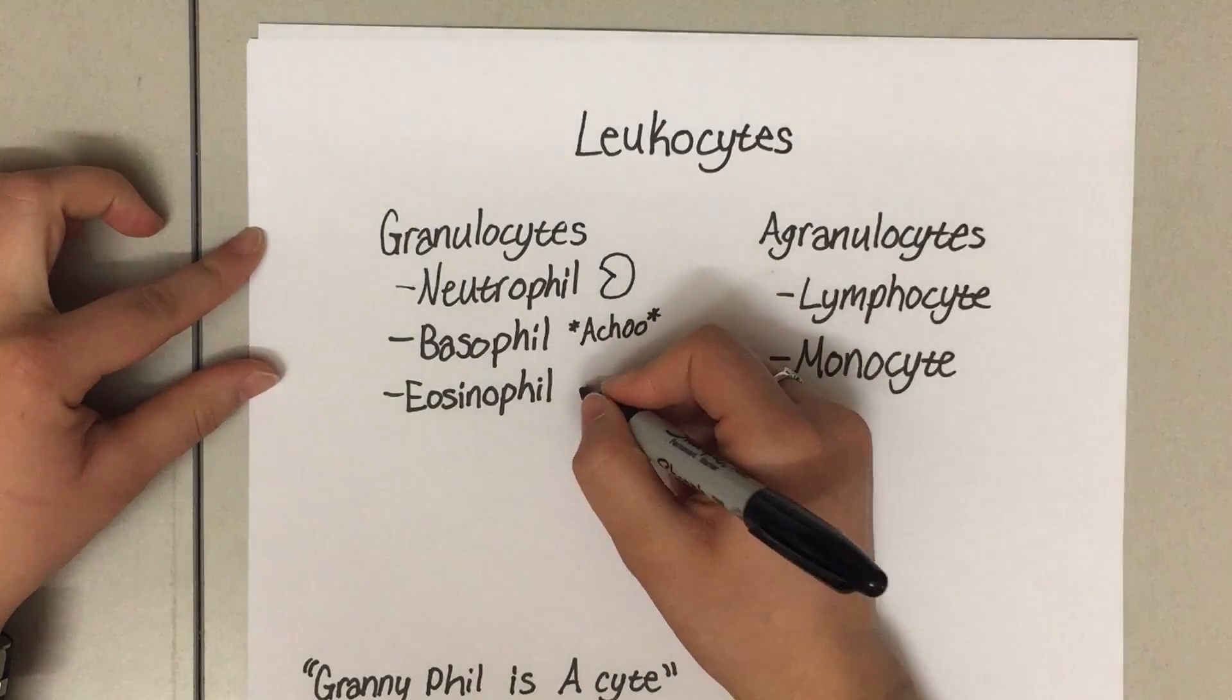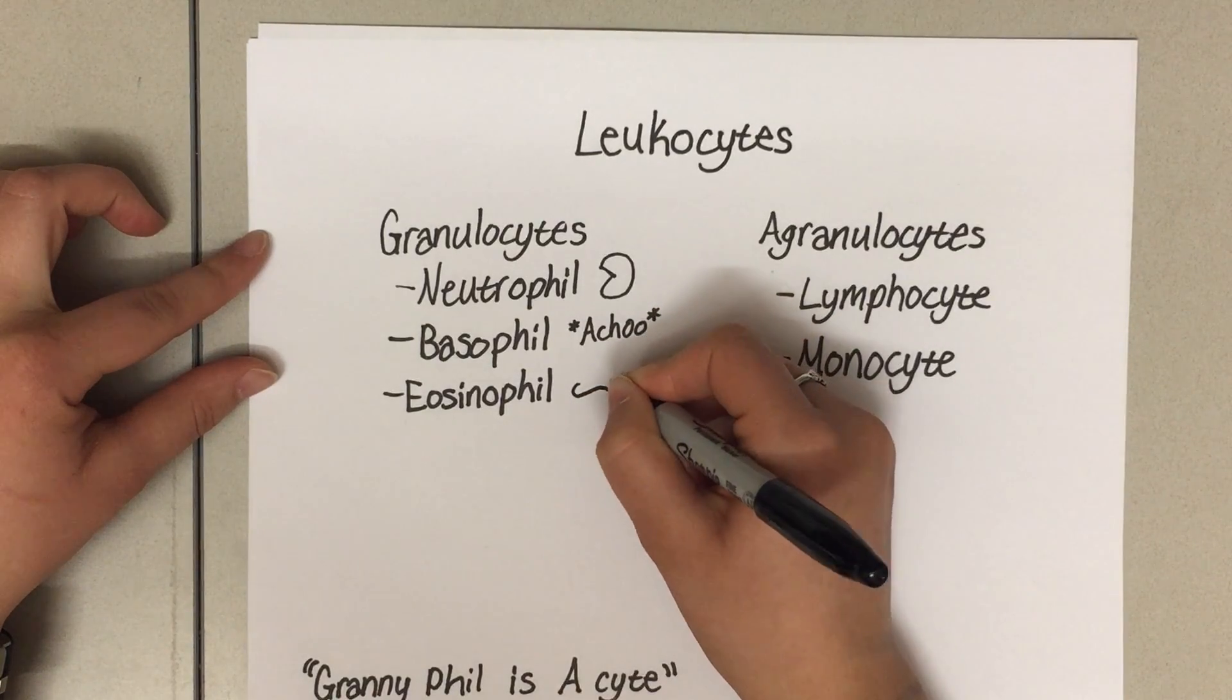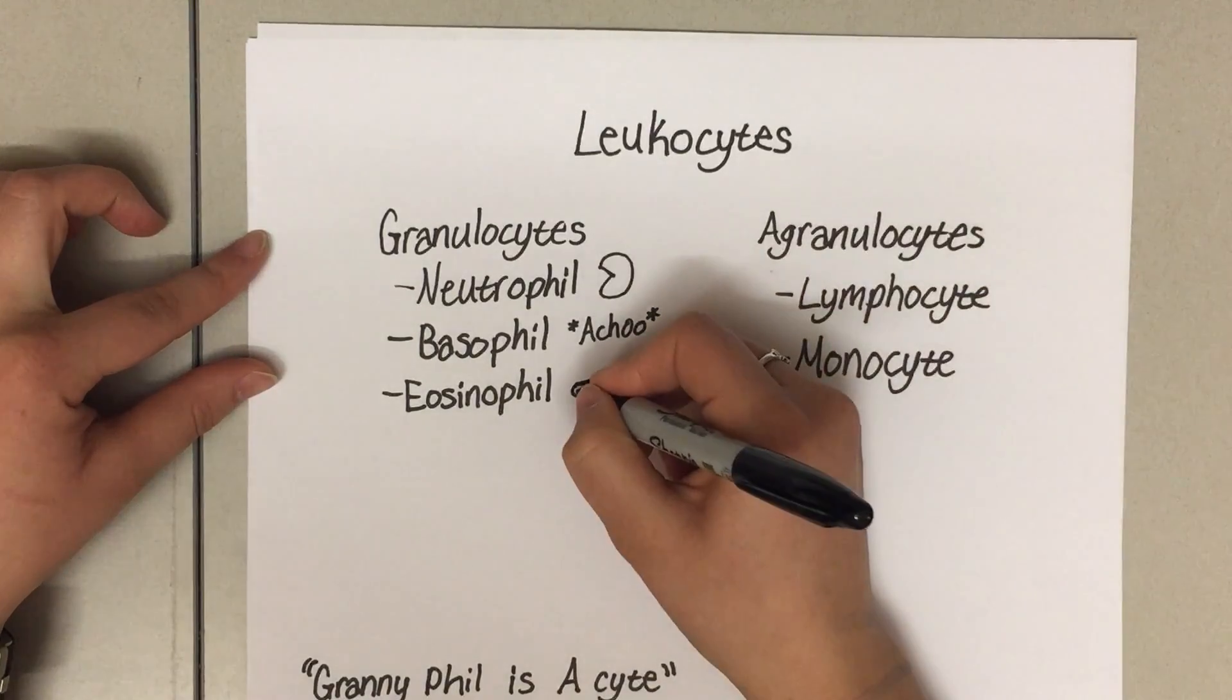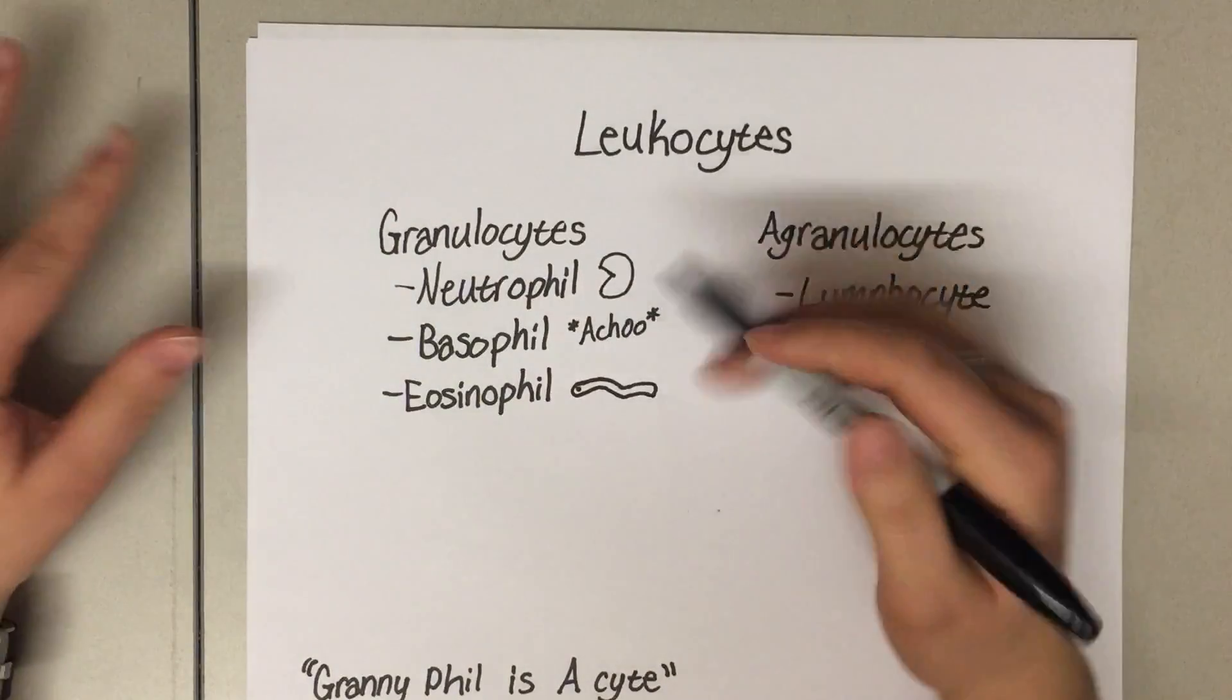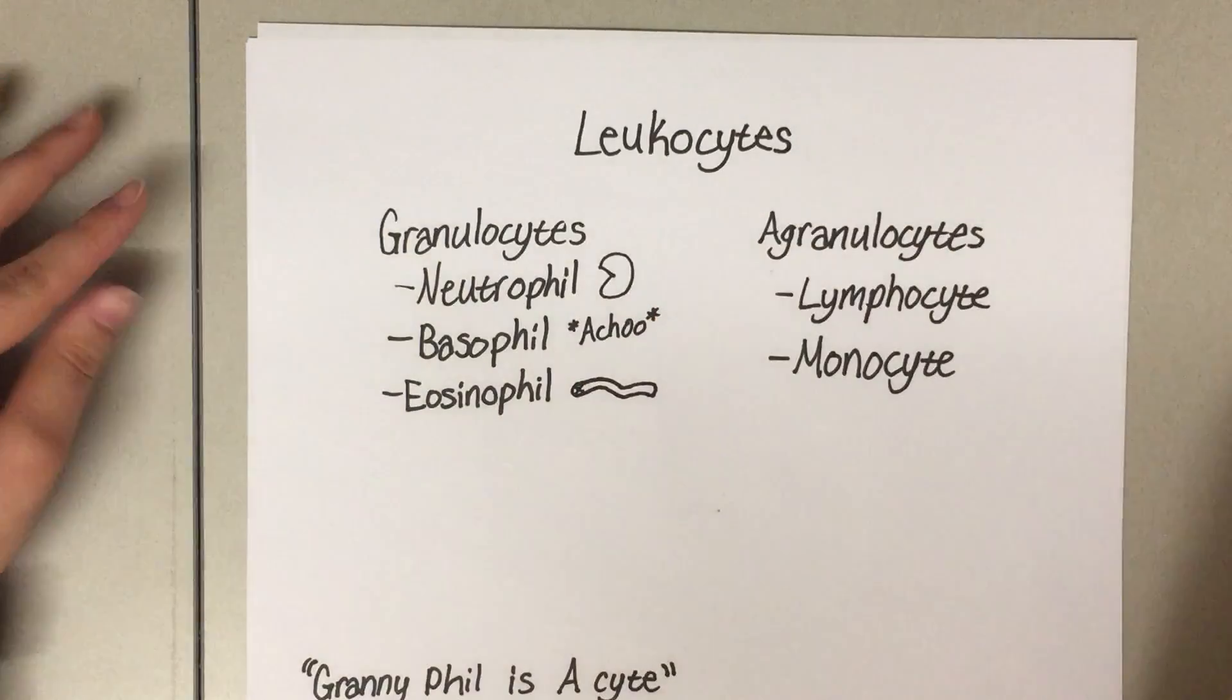Eosinophils are really good at helping destroy parasites. So if you had a little worm, an eosinophil would come and dump toxins onto the parasite and kill it.